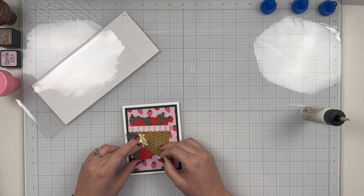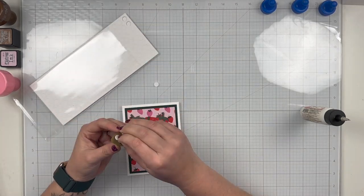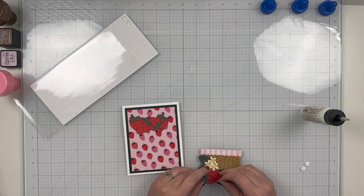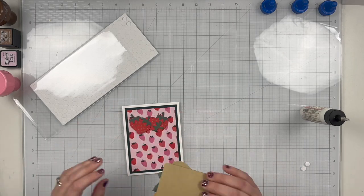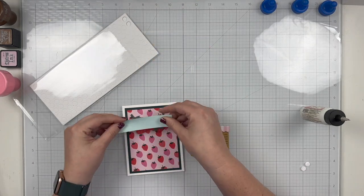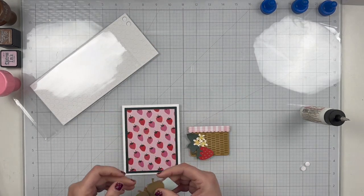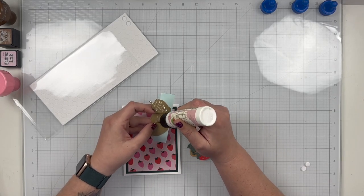I'm going to use some foam adhesive to pop up my strawberry just where it overlaps onto the basket. So just using some foam circles to attach that to my basket. Once that's done, I already have my strawberries pretty much lined up how I want them. So I'm going to grab a piece of mint tape and just use that to pick up my strawberries so they don't move too much.